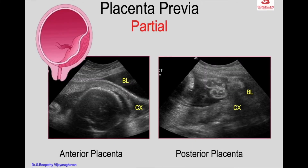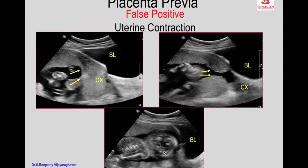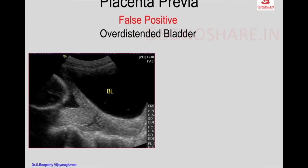Here this is the anterior placenta. You see the anterior placenta comes up to the edge of the internal os. When the internal os dilates, it will partially cover the internal os. However, the cervix is actually very far away from the placental margin. So this is a common case of false positive diagnosis of placenta previa.